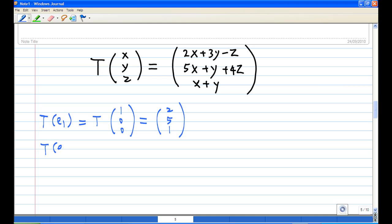I need to find T(e₂), which is the image of (0,1,0). That means x = 0, y = 1, z = 0. I'll get (3, 1, 1) after putting in x = 0, y = 1, z = 0.